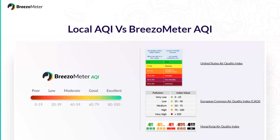There are many, many different air quality indexes, and for each number there is a category associated with it that relates to health. So there is good, moderate, and hazardous, and all of this is based on epidemiological studies that different governments decided to use to build their air quality index.